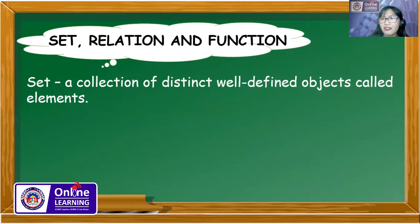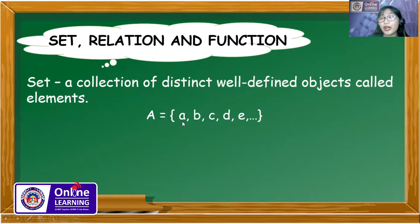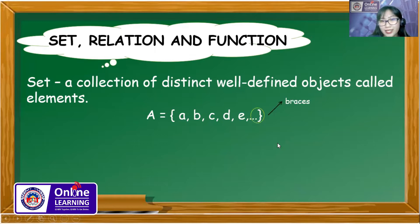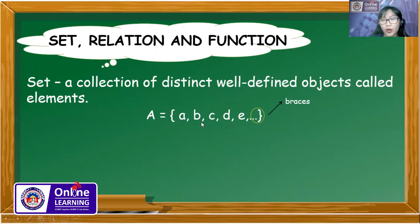Here is an example. Set A contains the members or elements A, B, C, D, E, and so on. We denote a set by a capital letter — here, capital letter A. We use braces and commas to list down all the elements or members in a set. So we can say: A is an element of set A, B is an element of set A, C is an element of set A, D is an element of set A, and E is an element of set A.